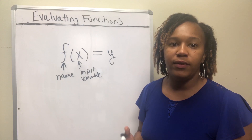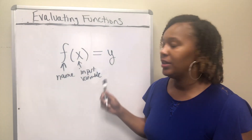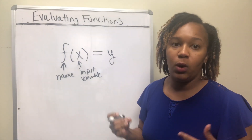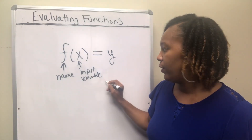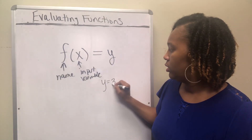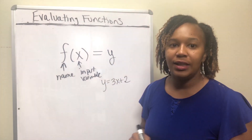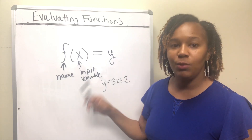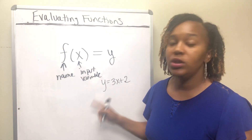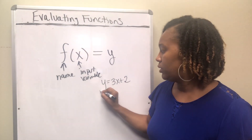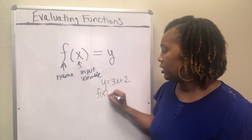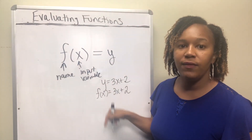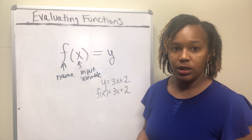Anytime you have a function, instead of writing y equal, you can write f of x equal — it means the same thing. For instance, y equals 3x plus 2 is a line. It passes the vertical line test, so it's a function. You can write it as y equals 3x plus 2, or equivalently as f of x equals 3x plus 2. So y and f of x are interchangeable — don't let that confuse you.